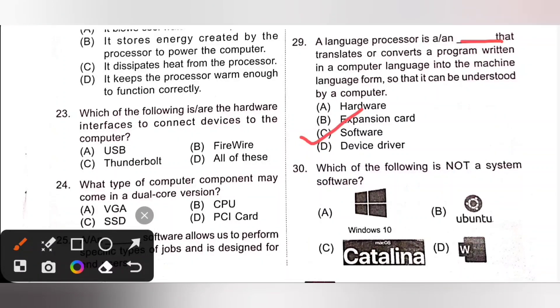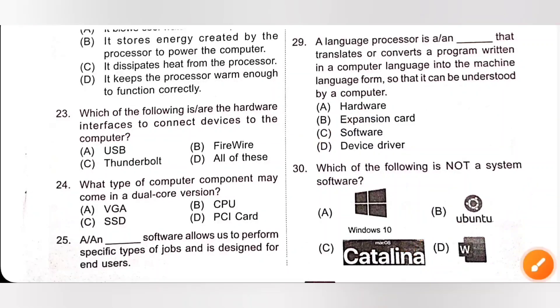Question 30. Which of the following is not a system software? Option A is a system software, B is also system software, C is also system software. But option D is MS Word - it is a word processing software and it comes under the category of application software. Option D is the correct answer.